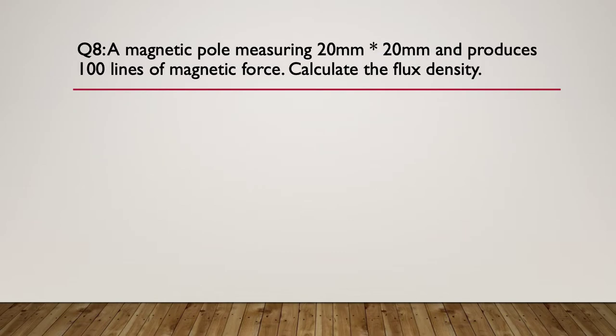Our last question: a magnetic pole measuring 20 millimetres by 20 millimetres produces 100 lines of magnetic force — calculate the flux density. Pause here. Here's your hint: it's the formula B equals phi over A. Pause while you work out how to apply the formula.